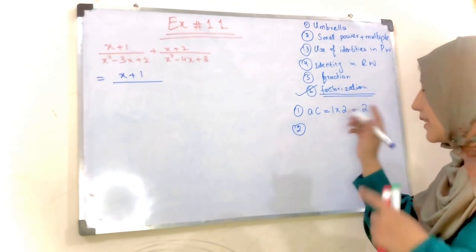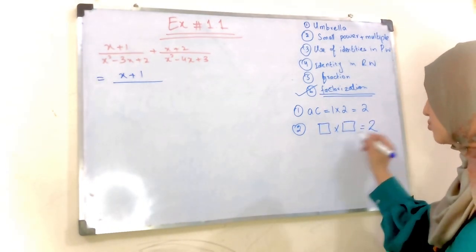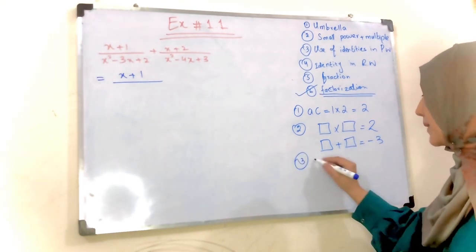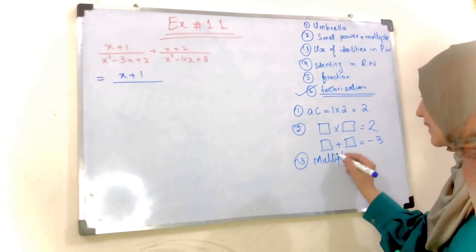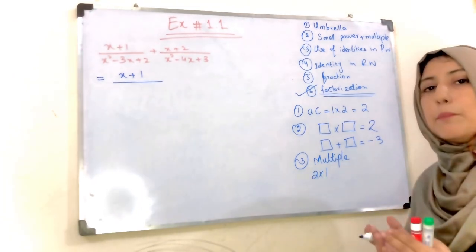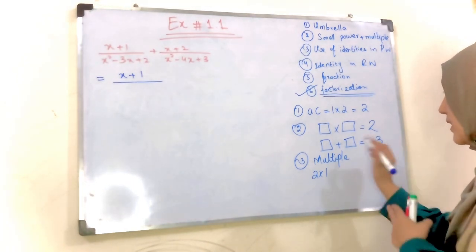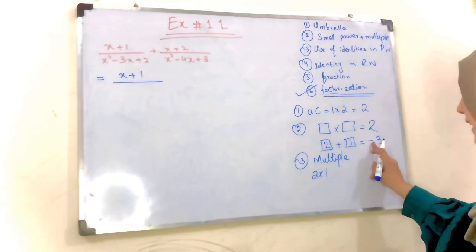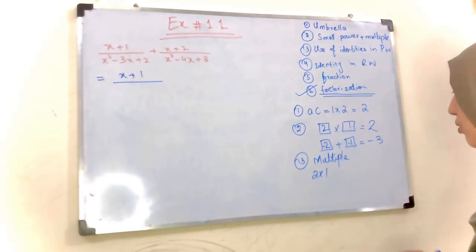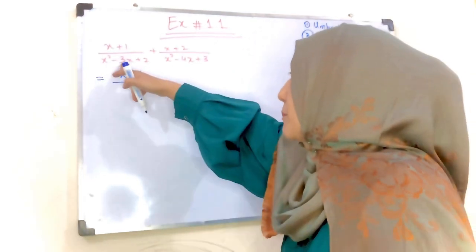Phir humne numbers ko find karna tha — kaisi numbers jo multiply karayi toh humne paas 2 aaye, aur add karayi toh humne paas minus 3 aaye. Multiples find kiye 2 ke — sirf ek hi multiple hai: 2 aur 1. Toh yeh pata hai ke 2 aur 1 ko add karayi toh 3 aata hai. Sign check karayi: minus 3 — toh minus 2 aur minus 1; minus 3 hota hai, aur multiply karayi toh 2 hoga. Toh dho numbers humne select kiye.